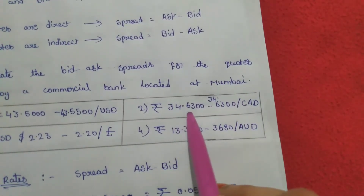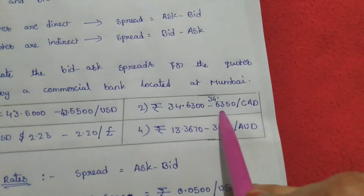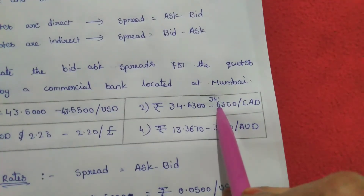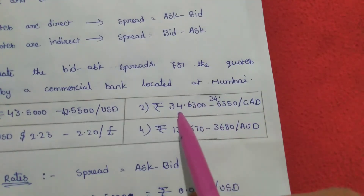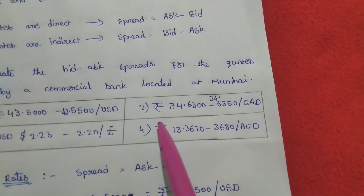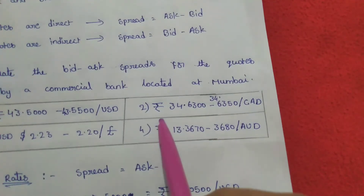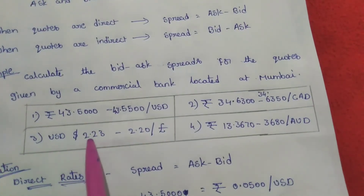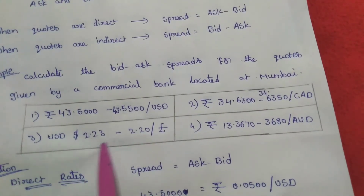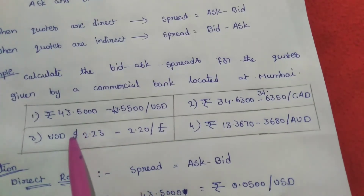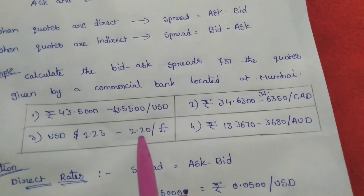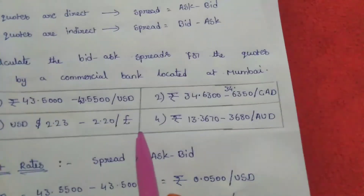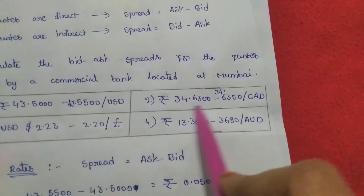Resuming the example: 34.6300 is the bid price and 34.6350 is the ask price. In a direct quote, the ask price is greater than the bid price — the ask is the selling price and the bid is the buying price. The third quotation (US dollars 2.23 and 2.20 per British pound) is an indirect quote. The fourth quotation is also a direct quote.